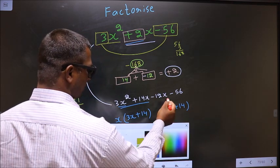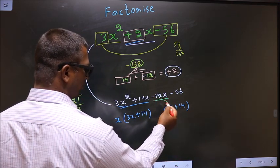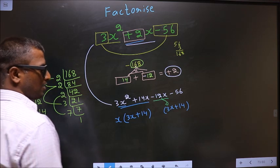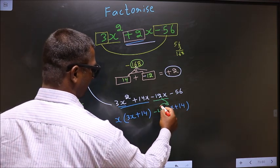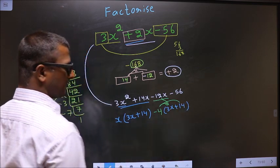When -12x - 56 is factored, we get -4(3x + 14). You can verify by multiplying back.